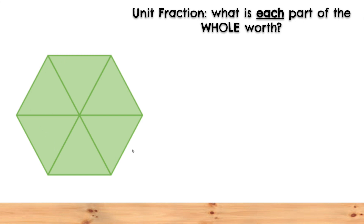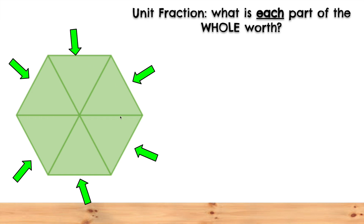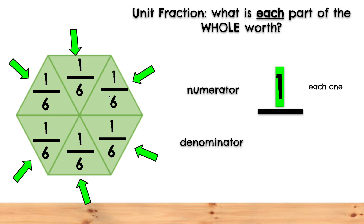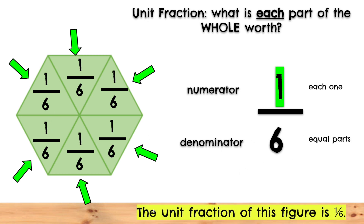Let's figure out the unit fraction of this figure. Remember, we have to figure out what each part is worth individually. Let's see how many equal parts we have: 1, 2, 3, 4, 5, 6. The denominator will have to be 6. Remember, unit fractions will always have a 1, so we know that each one of these is worth 1 sixth. The unit fraction must have a 1 at the top and below the fraction bar we need our denominator, which will be 6 equal parts. The unit fraction of this figure is 1 sixth.